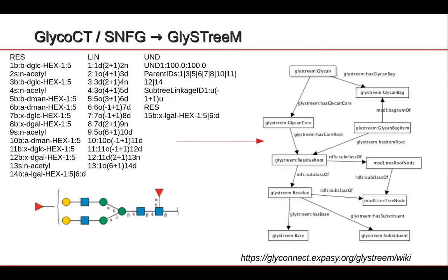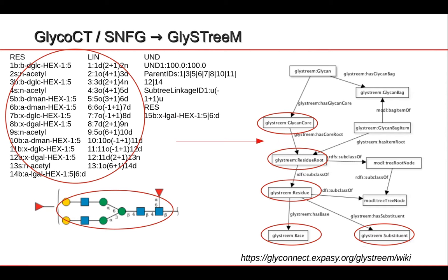Going back to the GlycoCT format shown in the top left-hand corner, the SNFG representation is shown at the bottom and our ontology model is shown on the right. The first residue in this glycan structure is represented by the first two lines in the residue list, by the blue square in the cartoon, and by a residue root object in our ontology. The entire linked part of the glycan is represented by the residue list and linkage list, the linked sequence in the cartoon, and all the corresponding objects in our ontology.